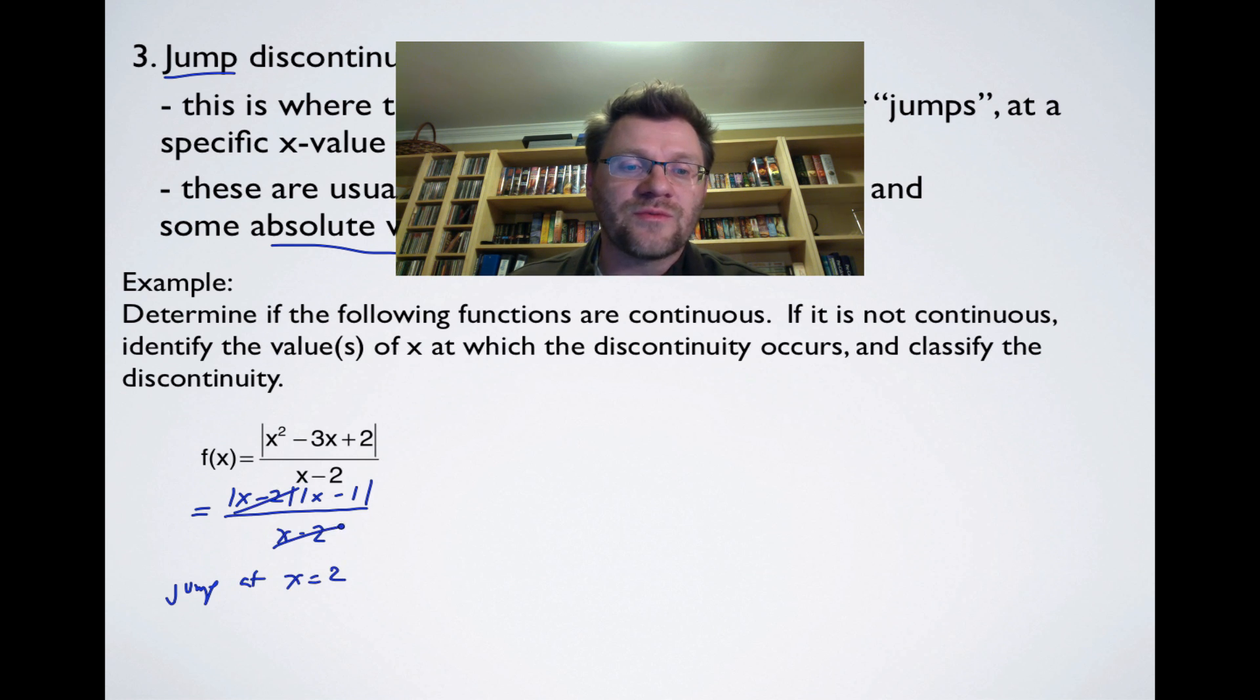And if we cancel these two things out, we're left with just the absolute value of x minus 1 and the absolute value functions. There's no discontinuities there, because we know that an absolute value function kind of just looks like a v. So there's only one type of discontinuity, and that's at x equals 2 in this case.